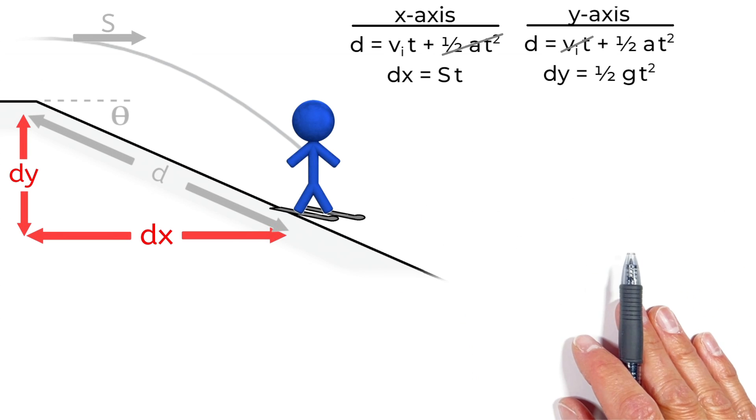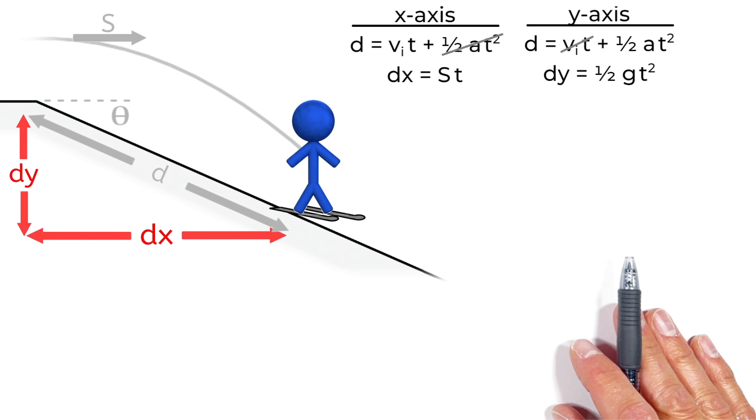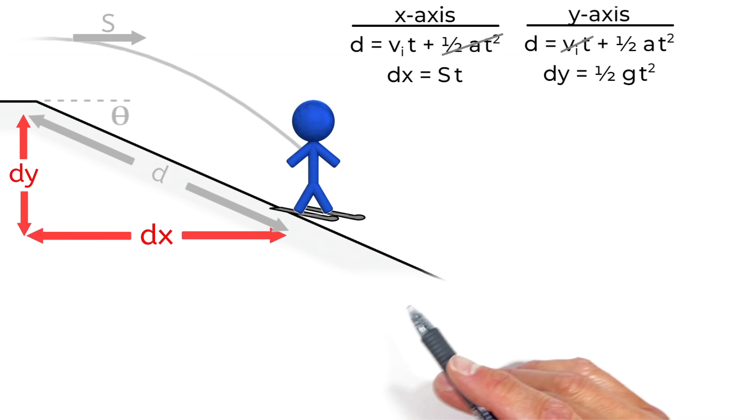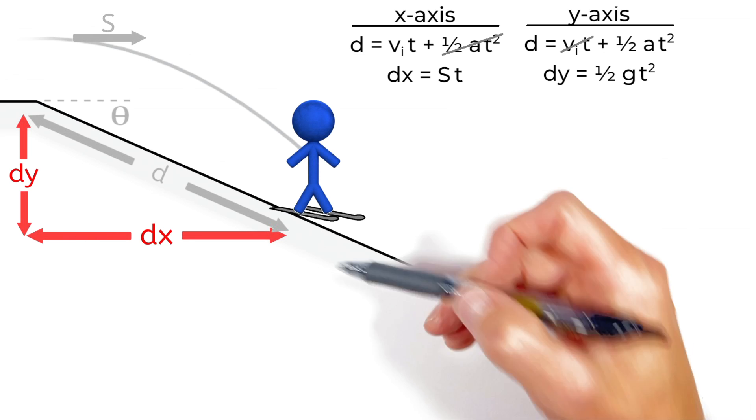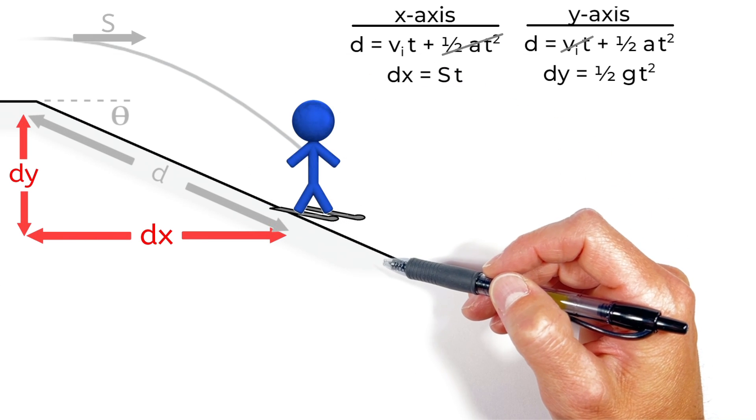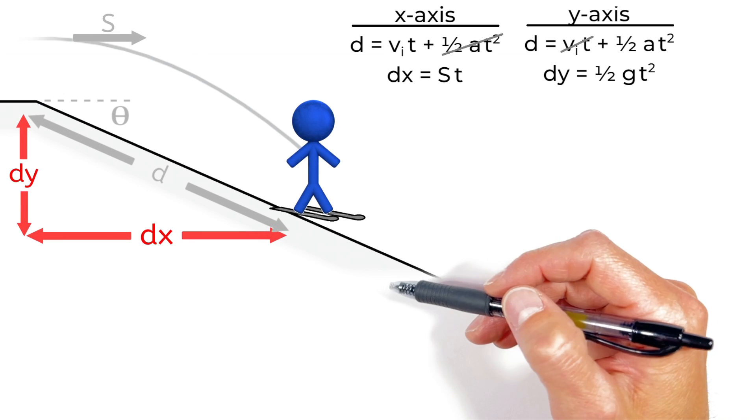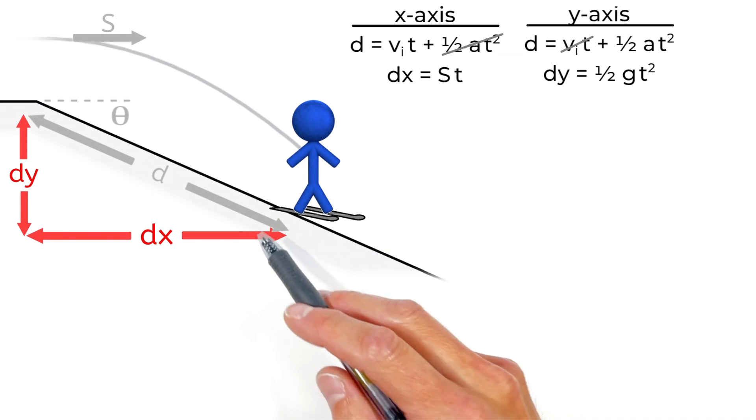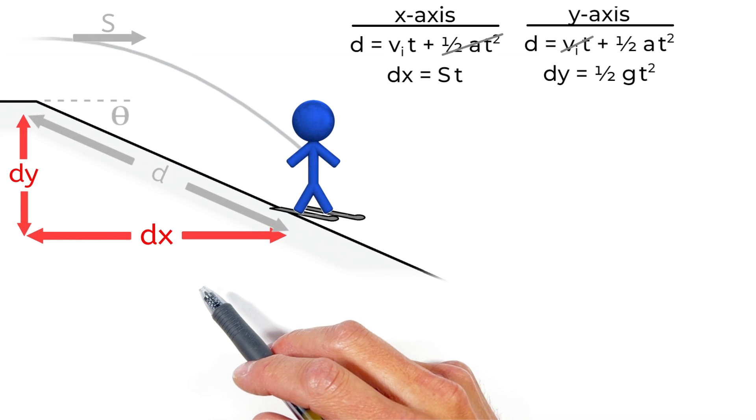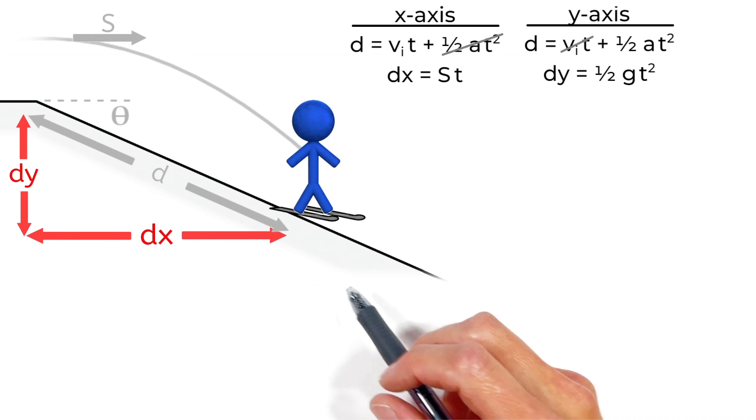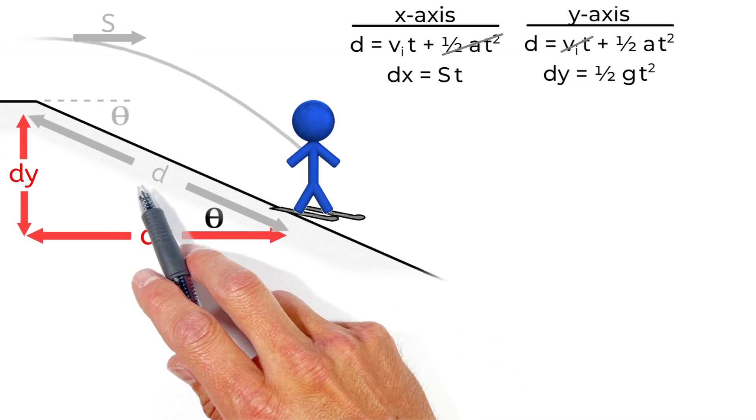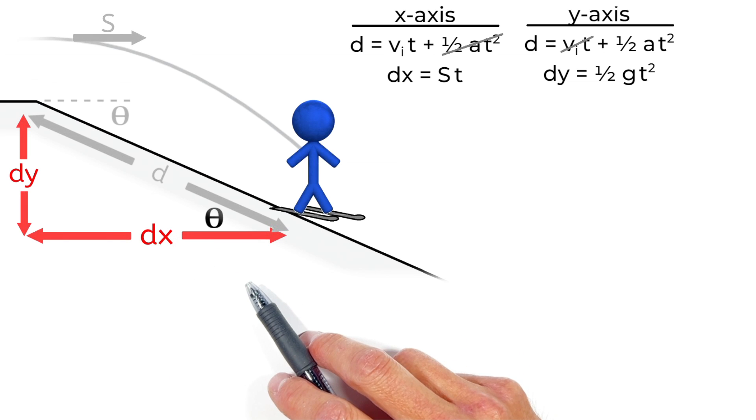Now realize, these two equations for the position of the skier in both the x and y-axis have to be related back to the angle of the hill. When the skier lands down here, the displacement of the skier in the y-axis and the x-axis are geometrically related to the angle of the hill. We really have a vertical and a horizontal displacement. And if you look at this as a right triangle, really what we have is an opposite and an adjacent side.